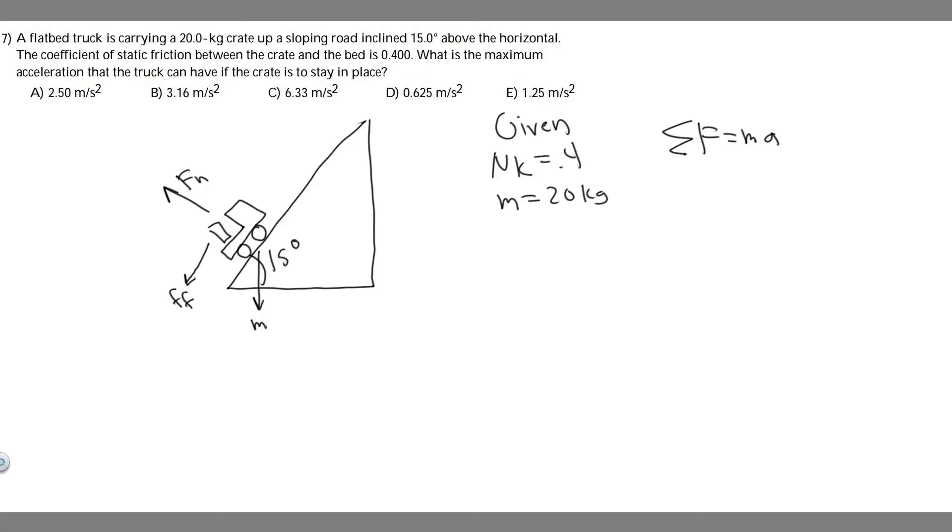In this problem, we're told a flatbed truck is carrying a 20 kilogram crate up a sloping road inclined at 15 degrees above the horizontal. The coefficient of static friction between the crate and the bed is 0.4. What is the maximum acceleration that the truck can have if the crate is to stay in place?